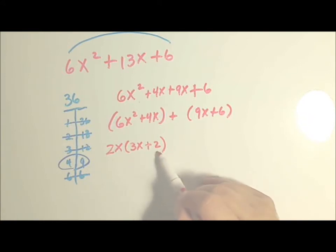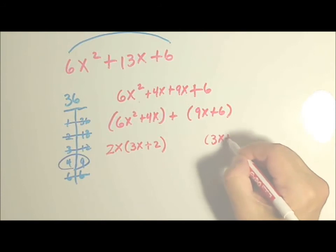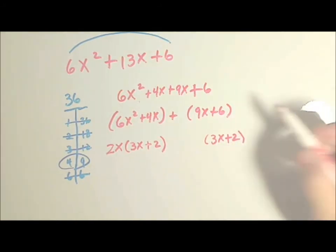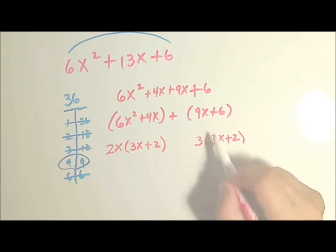Now I'm going to reuse this factor, because it has to be common for both of these. So this factor must work for this group here. If it doesn't, I've done something wrong. What times 3x is 9x? Well, that would simply be a 3. Now we check. 3 times 3x is the 9x. And 3 times 2 is the 6.